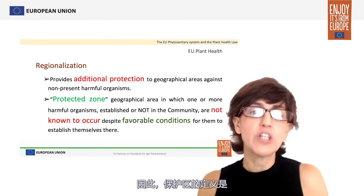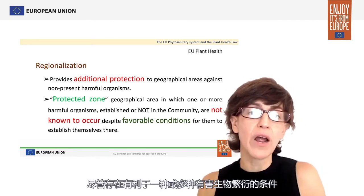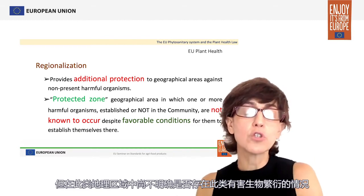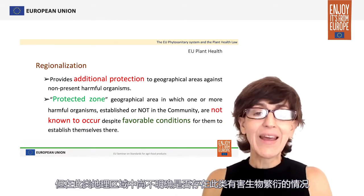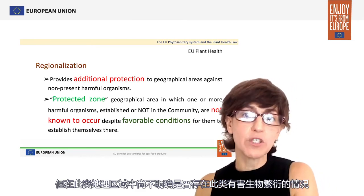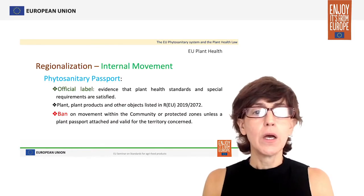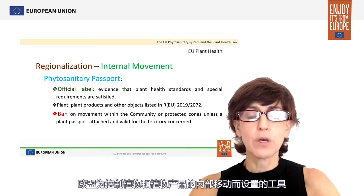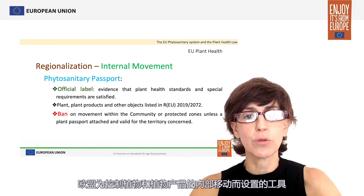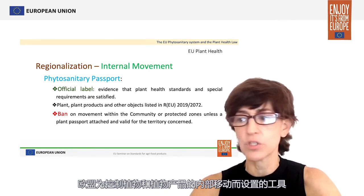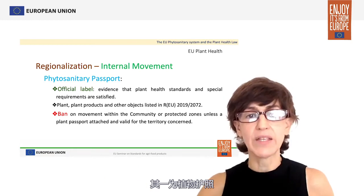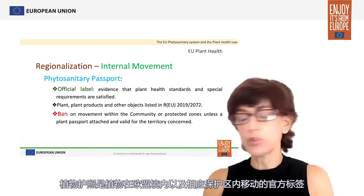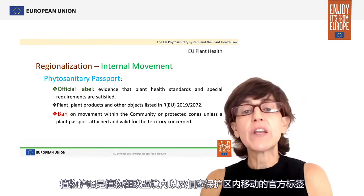Protected zones are geographical areas in which one or more harmful organisms that may be established or not in the rest of the Union are not known to occur, in spite of existing favorable conditions for the establishment of such pests. Also, in terms of internal movement, the European Union has put in place tools to control the internal movement of plants and plant products, one of them being the plant passport.